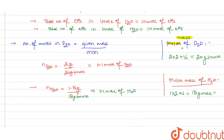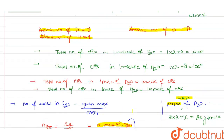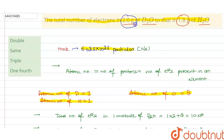From here, one mole of D2O contains 10 moles of electrons. So 0.1 mole of D2O will contain 0.1 multiplied by 10, that is 1 mole of electrons. Similarly, 0.1 mole of H2O will contain 10 multiplied by 0.1, that is 1 mole of electrons. So in both cases we are getting the same number of electrons. The total number of electrons in 2.0 gram of D2O and 1.8 gram of H2O is the same — it will be 1 mole of electrons.